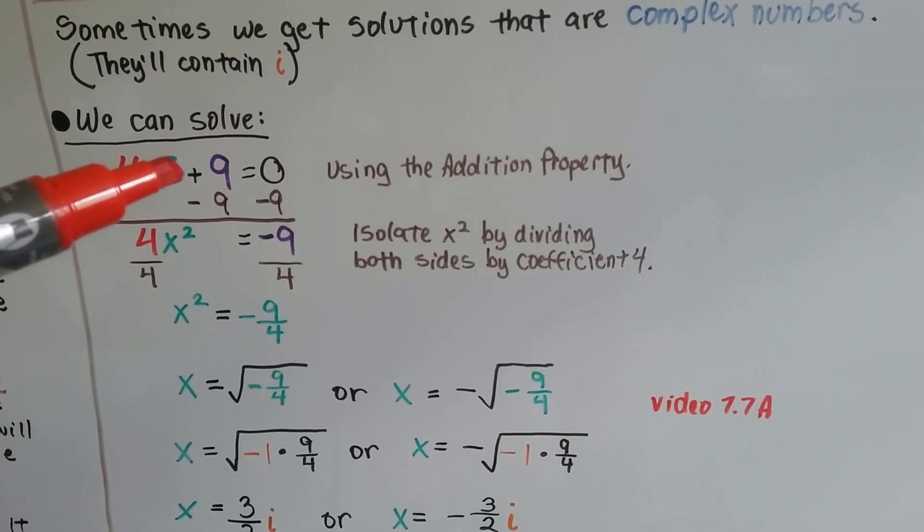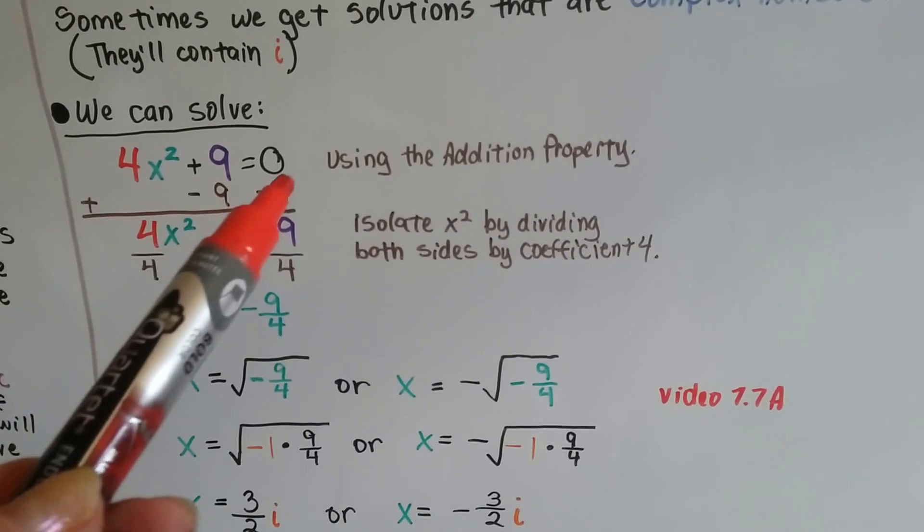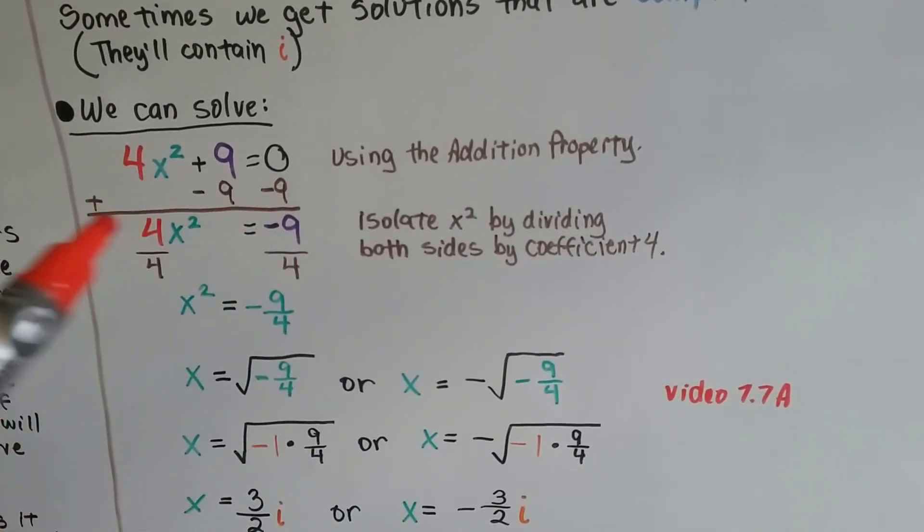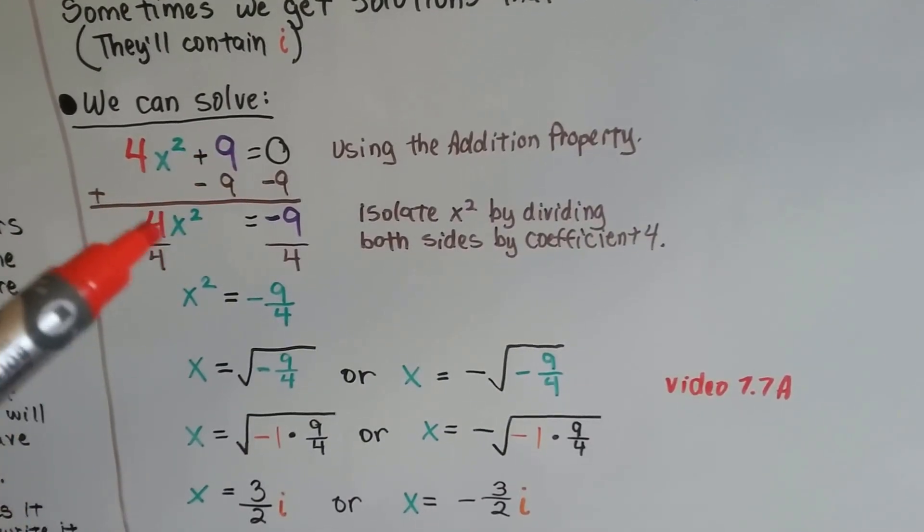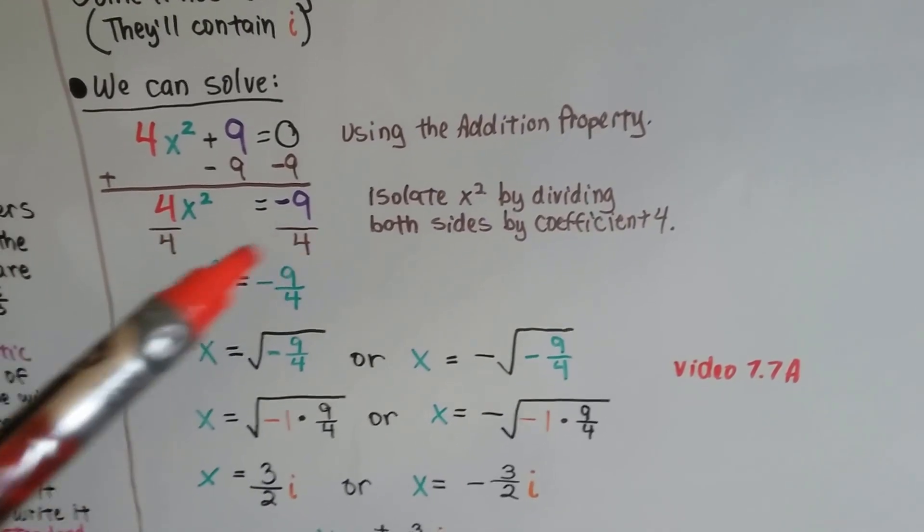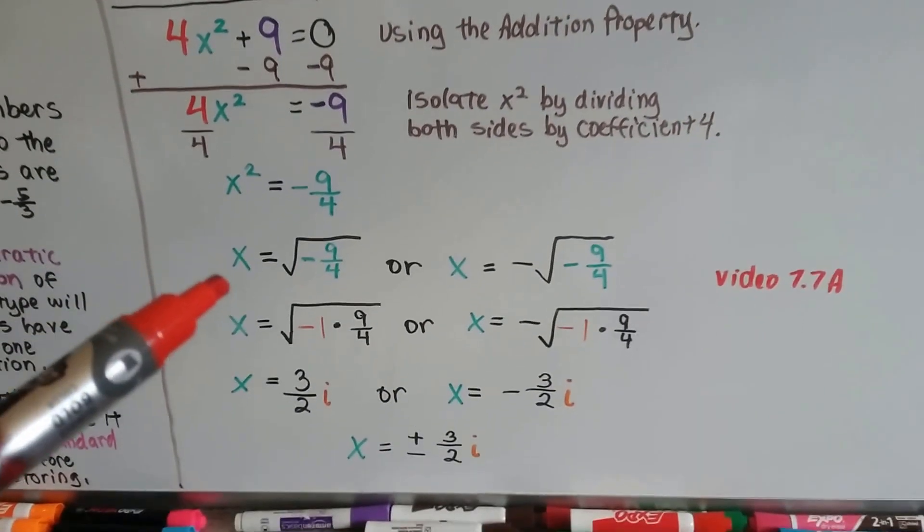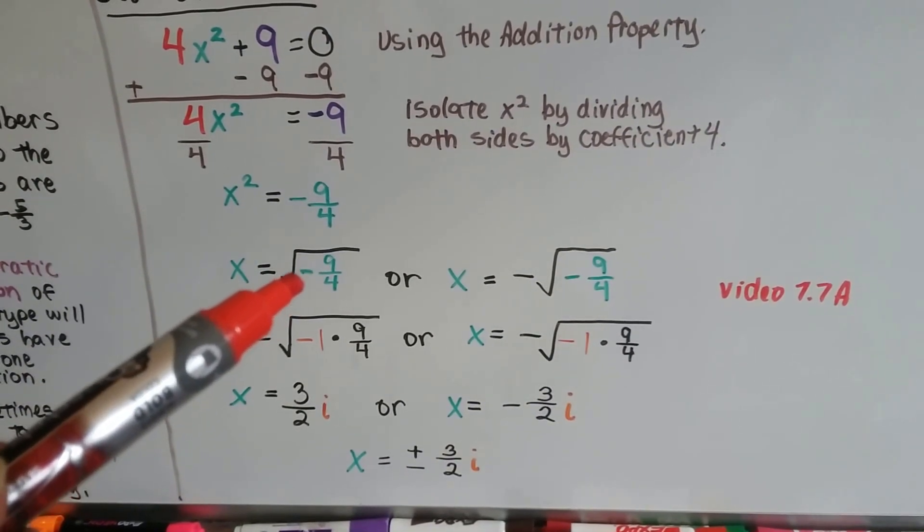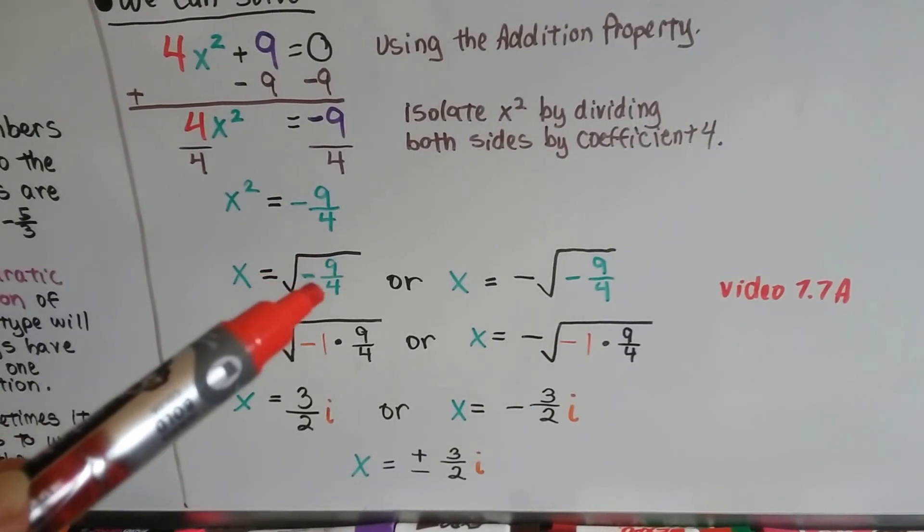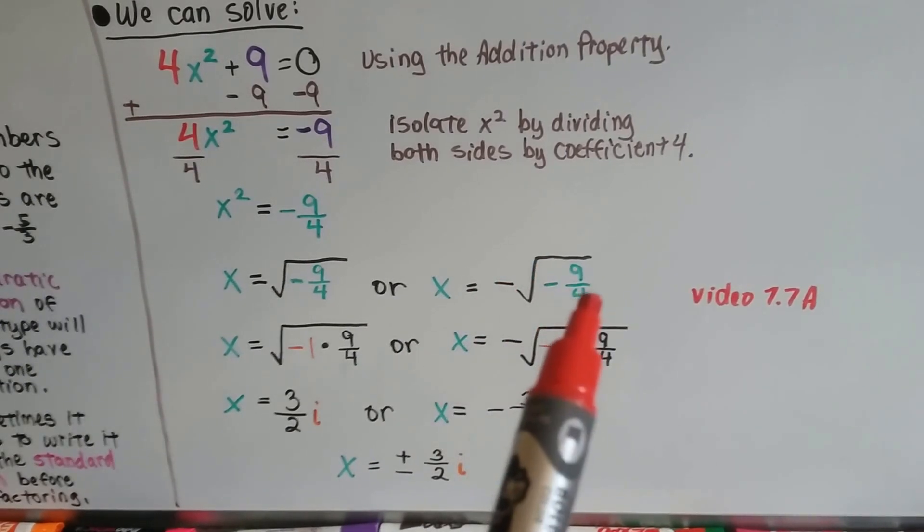So, we can solve 4x squared plus 9 equals 0 using the addition property. We want to isolate this x squared, don't we? So we're going to subtract 9 from each side, or you could say we're going to add a negative 9 to each side. That's going to give us a zero pair here. So we've got 4x squared equals negative 9. We want to isolate that x squared so we can divide both sides by this 4 coefficient. We get x squared equals negative 9 fourths. So we have x equals a square root of negative 9 fourths. See? Because we took that exponent off, so now we just have an x. So this side gets the square root symbol, the radical. Or x equals a negative square root of negative 9 fourths.